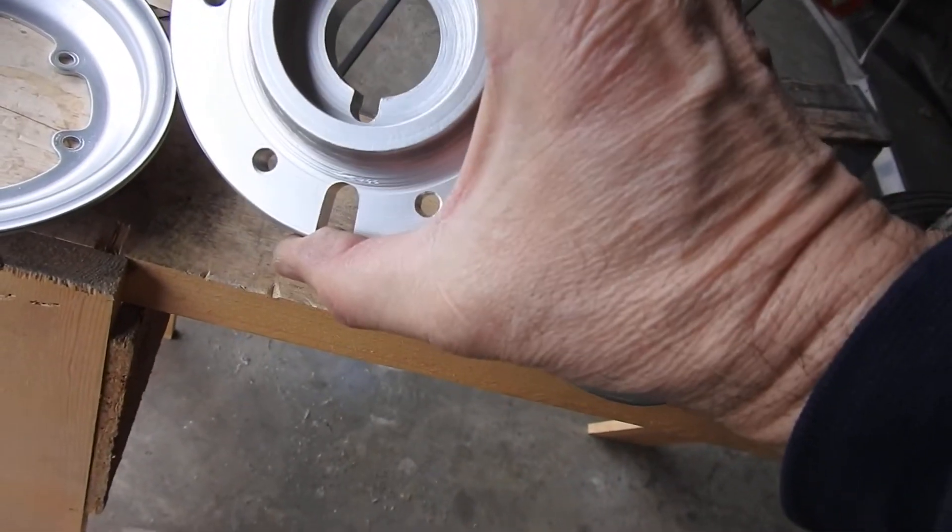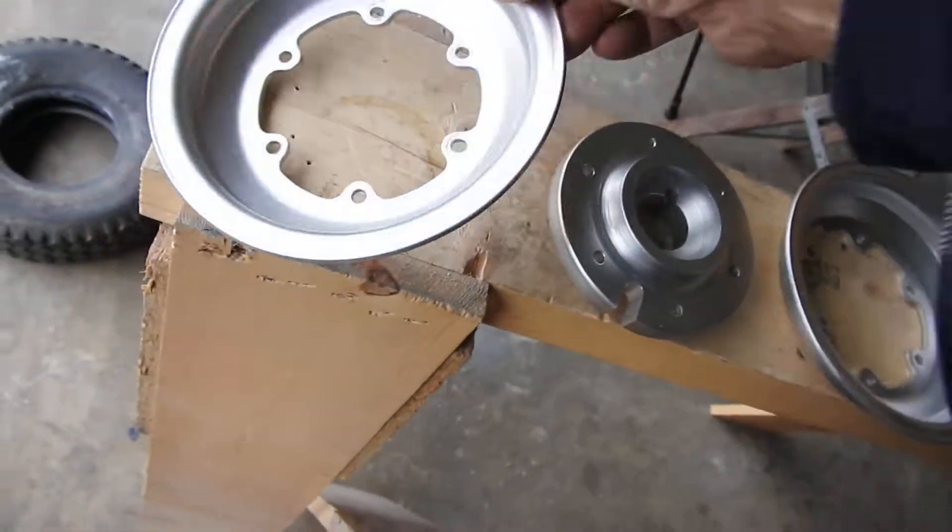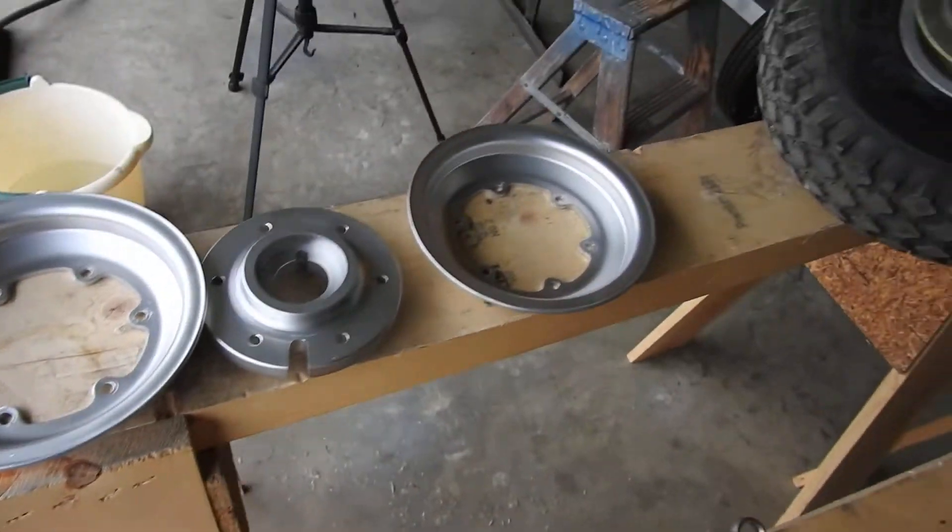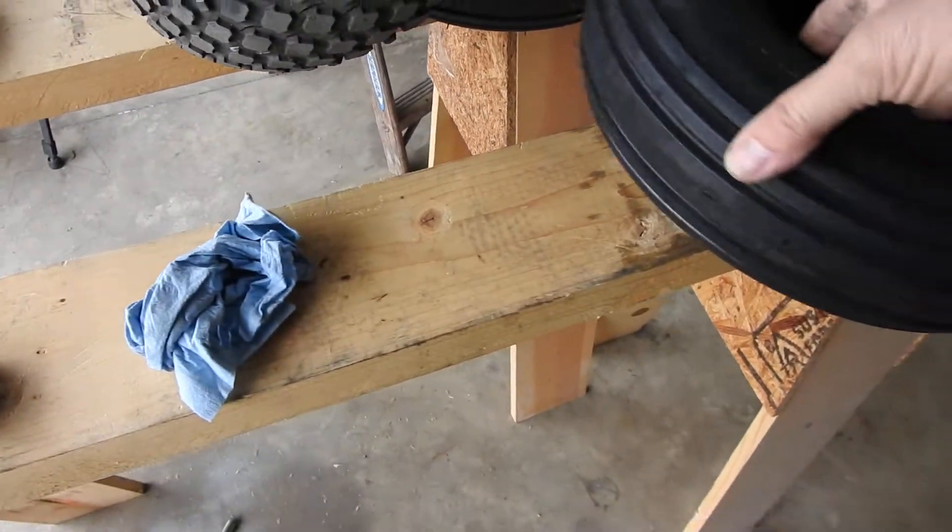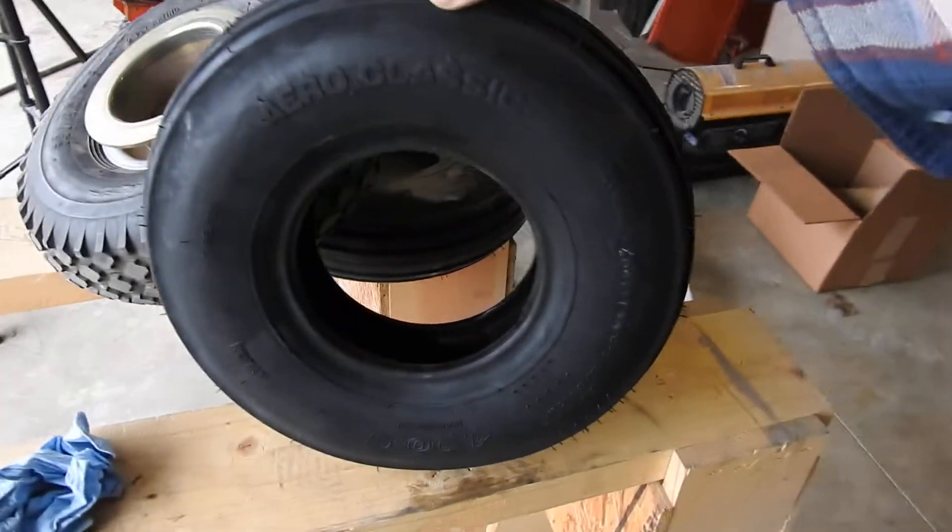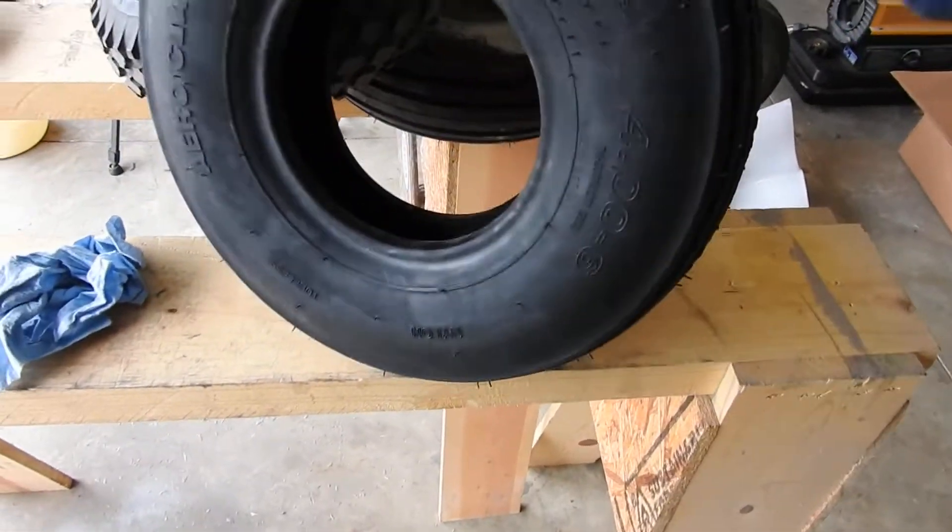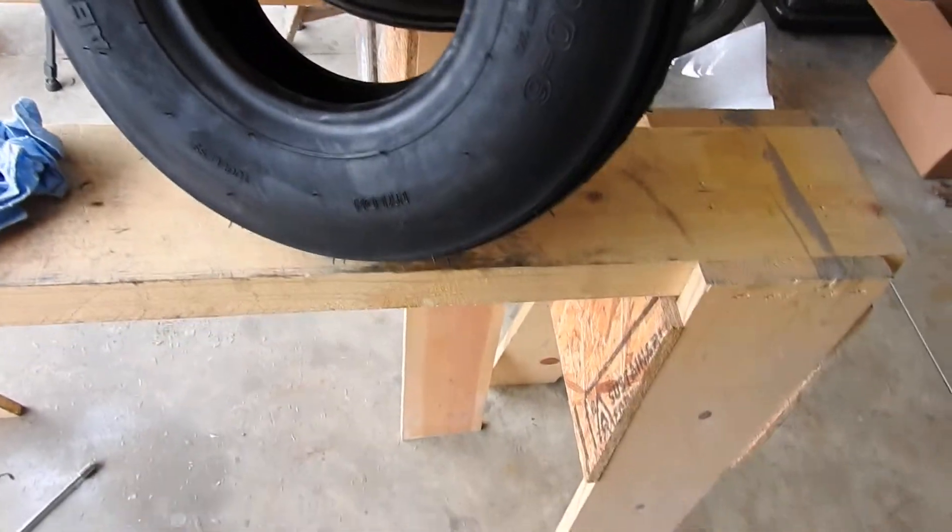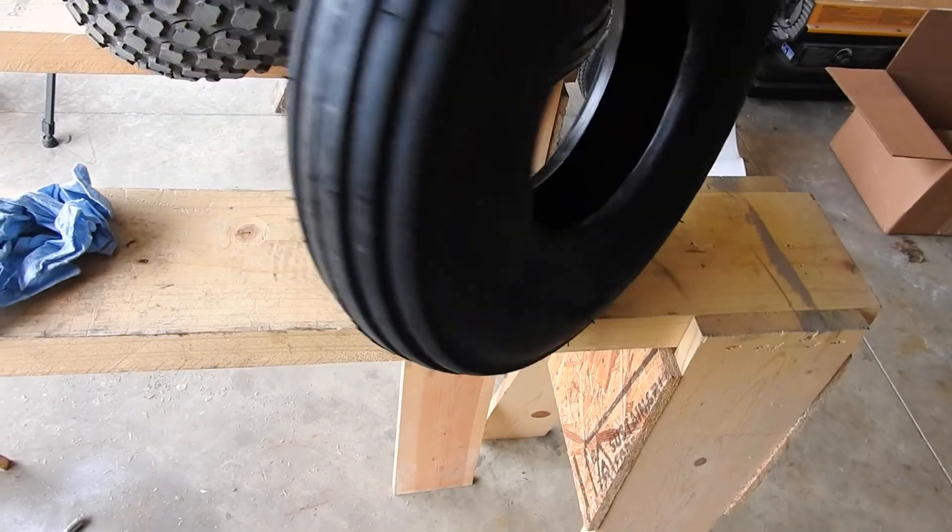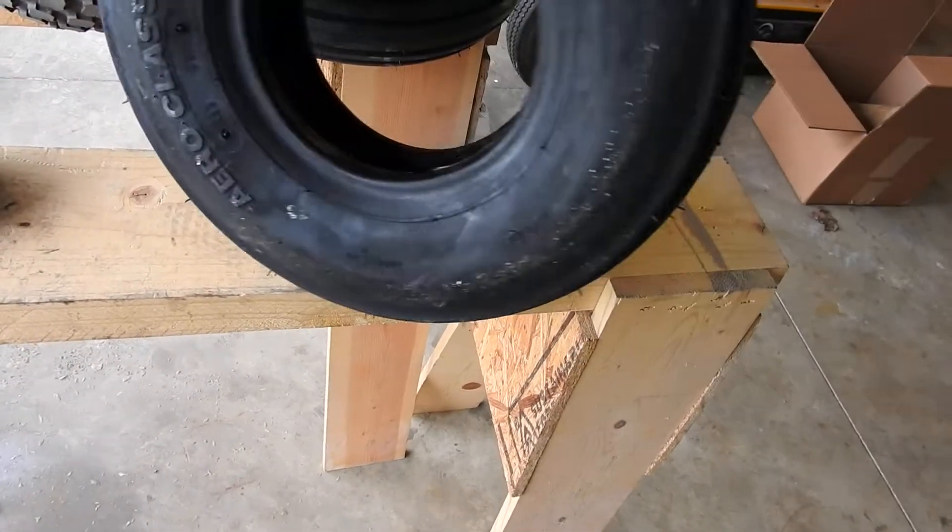I had to pop the bearings out of this, the bearing cups. So I was going to blast these and put the new tires on. As you can see, here's the new tires. These are actual Aero Classic tires. I think it says they're made in Vietnam, possibly. Either way, I got these from Aircraft Spruce.